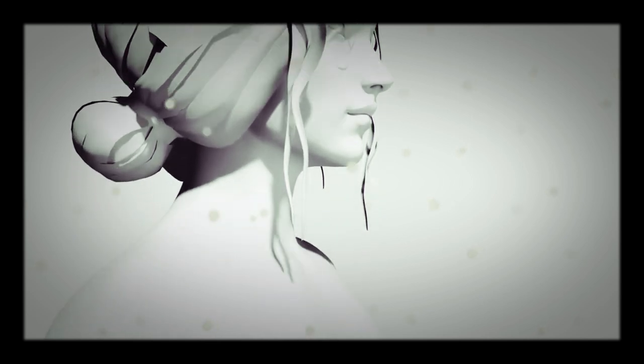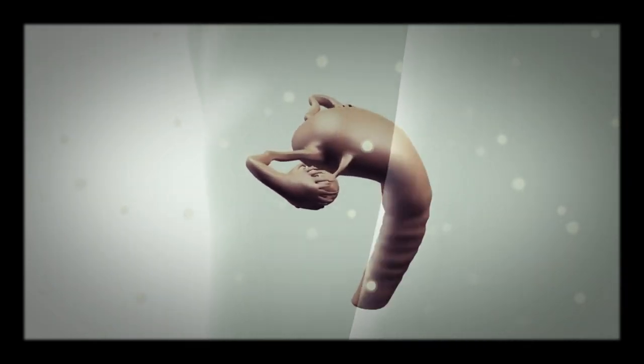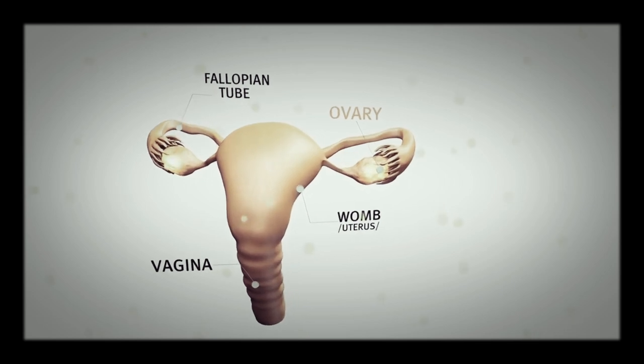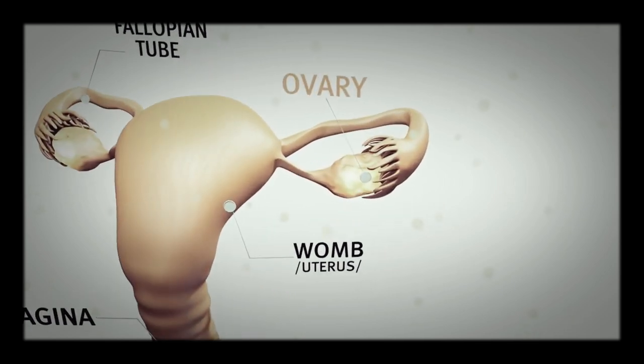After that, ovulation occurs once in a cycle when two egg cells leave the ovary and get into the fallopian tube.